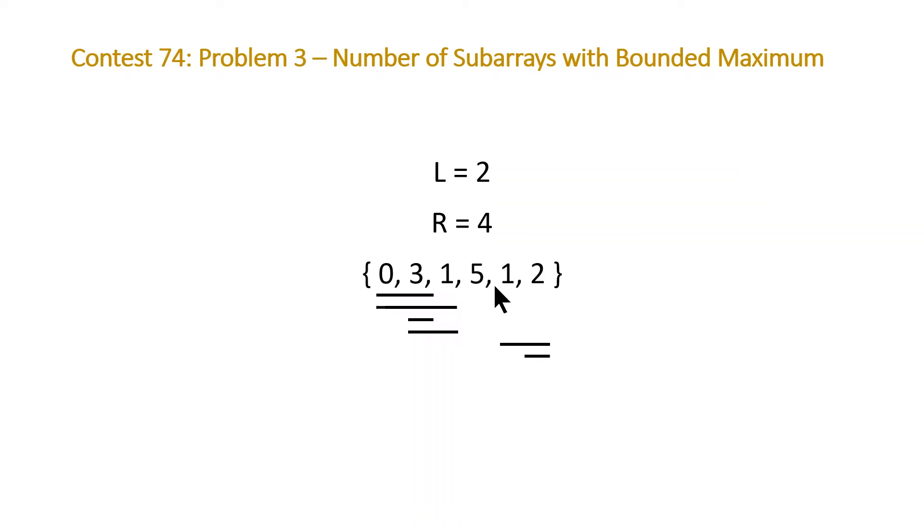However, when we move to the 5, because 5 is greater than our maximum value, our maximum bound for the maximum value in our subarray, we're not going to have any subarrays including this number.